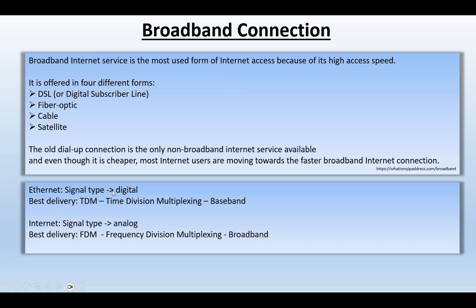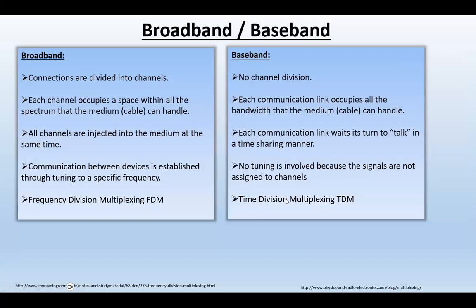Ethernet is a digital signal, and the best delivery method for Ethernet is TDM — Time Division Multiplexing — and it is baseband modulation. The internet, on the other side of the modem from outside, is in analog form, and its best delivery is FDM — Frequency Division Multiplexing — which is broadband. So: time division multiplexing is baseband, and frequency division multiplexing is broadband.